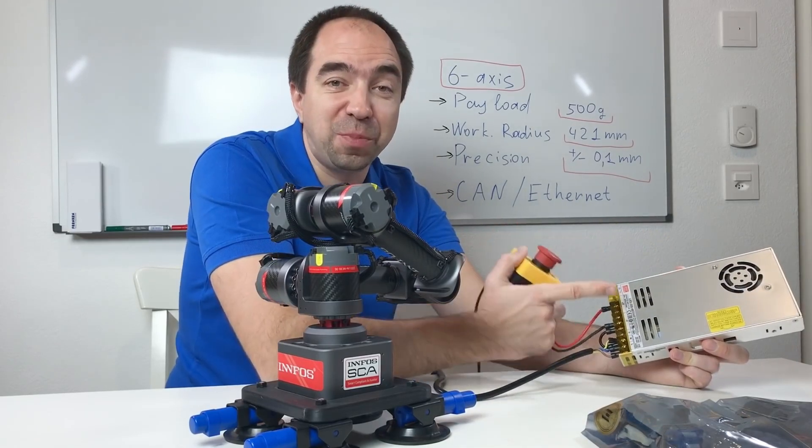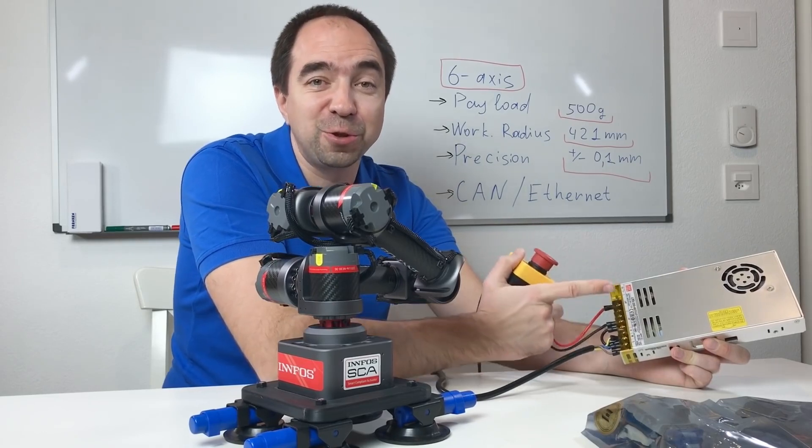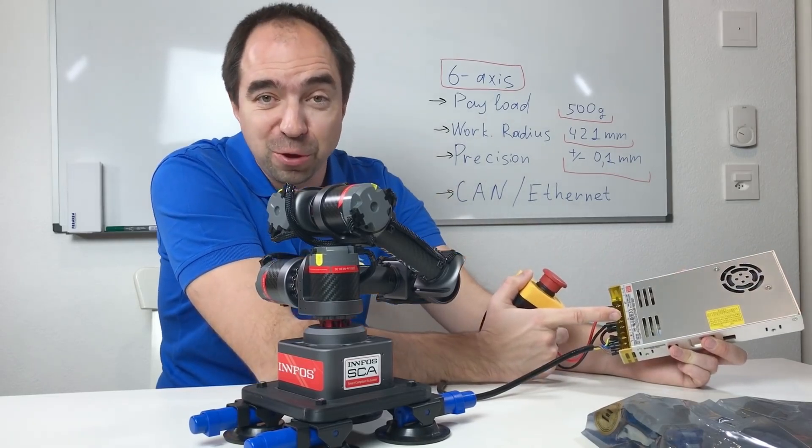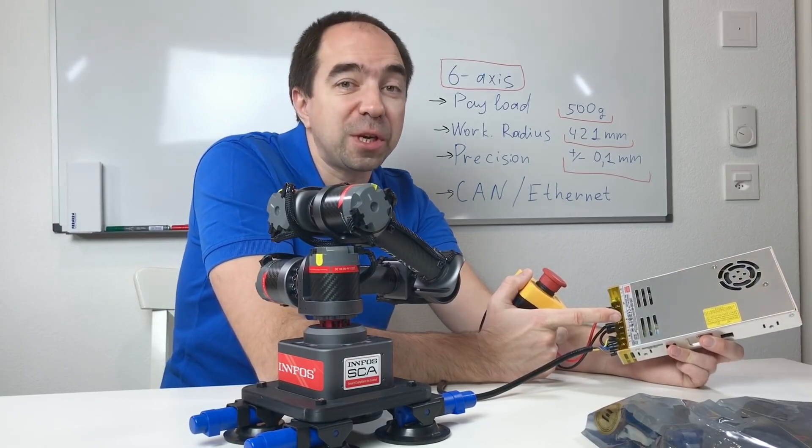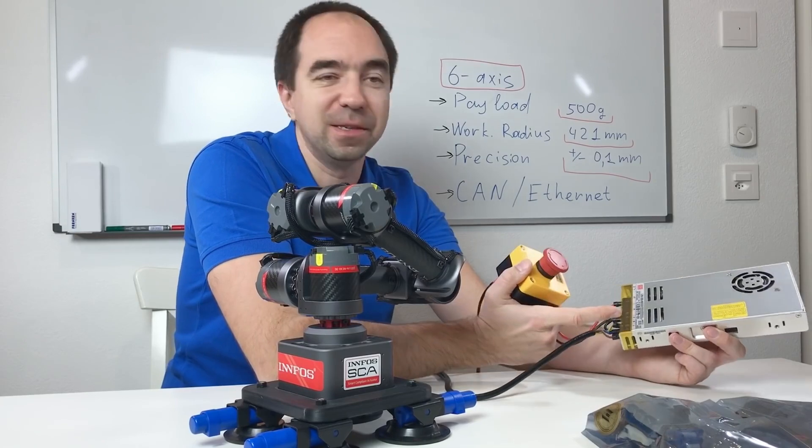The power supply will give power to the electronics. The electronics will give this power to the robot. The robot will communicate to the electronics through the CAN bus. And afterwards the electronics will communicate to the computer through ethernet. So let's connect it.